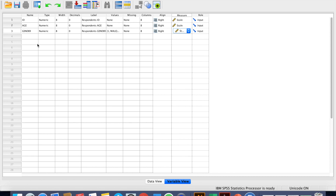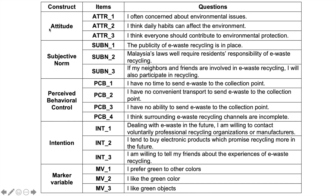Once you have keyed in your demographic variables, you're going to key in your constructs. Going back to the slides — for attitude, there are three items and I have a coding for each item: ATTR1, ATTR2, and so on for subjective norm and perceived behavioral control as well. Note that I've put the number at the end, behind the label name — you have to put the number behind because SPSS would not be able to identify it, or it will show you an error, if you put the number at the beginning. For your survey items, you'll likely have a Likert scale — probably 5-point, 6-point, or 10-point, ranging from strongly disagree to strongly agree.